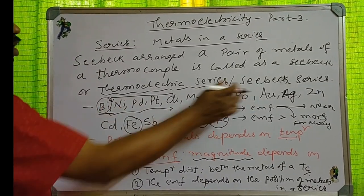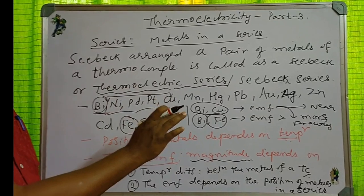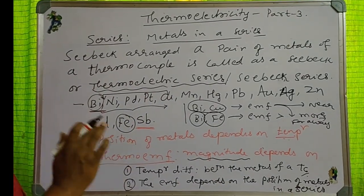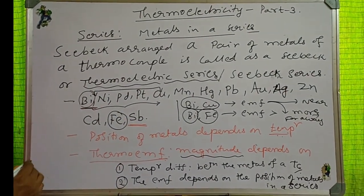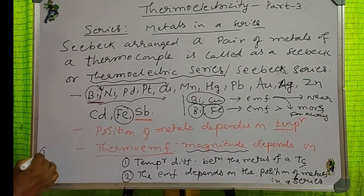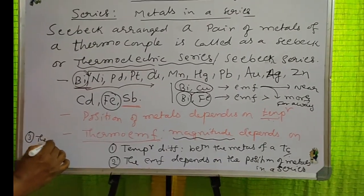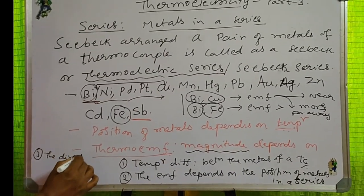The thermo-EMF between metals that are near each other is less, and the thermo-EMF between metals that are far away is more. The third important parameter is the direction of the current.